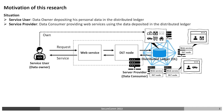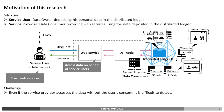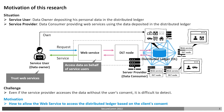I will explain the motivation for this research. When considering such services, the user naturally sends a request to the web service, which reads and writes the distributed ledger and returns the result. Such procedures are realized by trusting that the web service is accessing the distributed ledger correctly. In other words, the service provider is permanently granted access to the necessary data. In this case, even if the service provider accesses the data without the user's consent, it is difficult to detect.